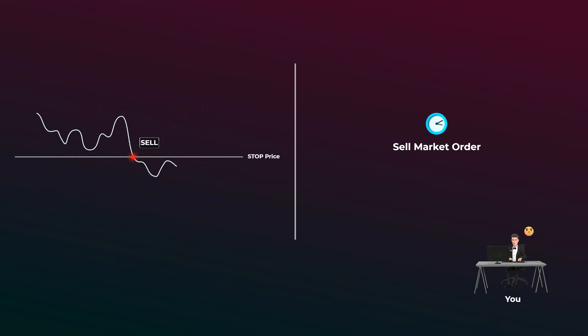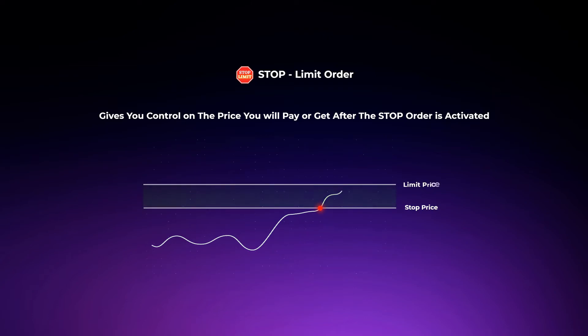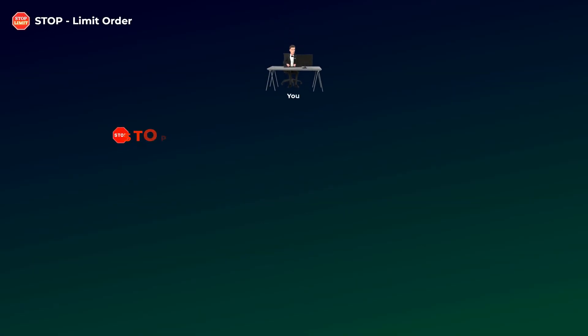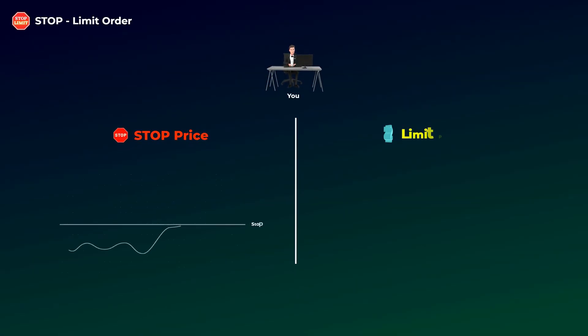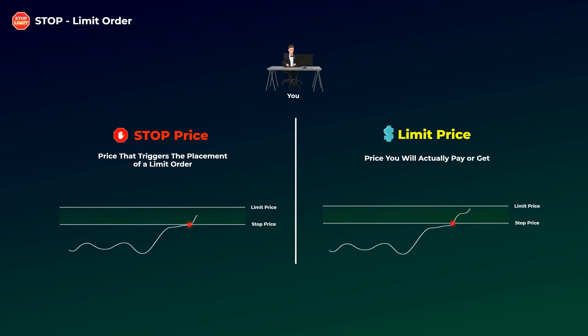A solution to this problem is using a stop limit order. A stop limit order gives you control over the price you will pay or get after your stop order is activated. It is basically a stop order that, once activated, places a limit order with your specified limit price. So here you need to set two prices: a stop price and a limit price. The stop price is the price that triggers the placement of a limit order, and the limit price is the price you will actually pay when buying or get when selling.